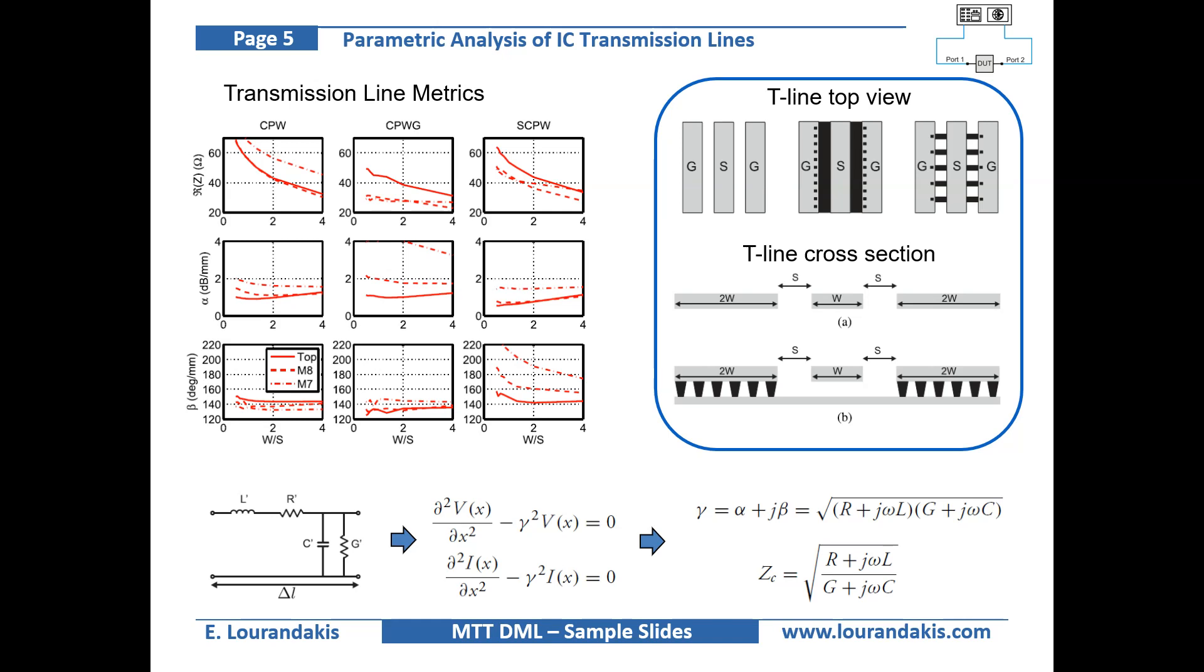By comparing the transmission line matrix, we see that the shielded coplanar waveguide exhibits the lowest loss and highest phase shift. And by that it exhibits a size reduction potential for on-chip transmission line design, since the desired phase shift can be achieved by using a shorter physical length of the transmission line. This is the so-called slow wave transmission line effect.